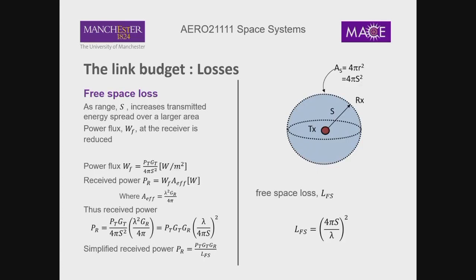If an object passes through the signal path, you get Doppler effects — a frequency shift rather than necessarily a pure loss. You'd need a system on board to change the frequency to accommodate that Doppler shift to distinguish the signal, and failure to fully reconstitute the signal could result in losses.